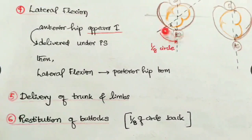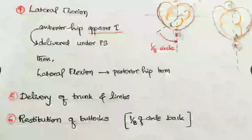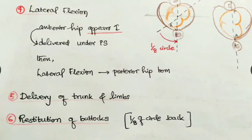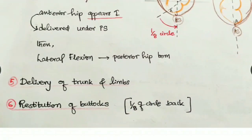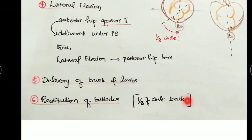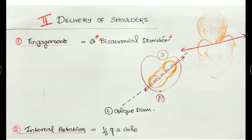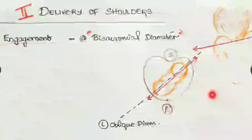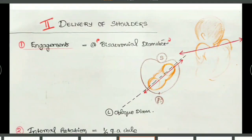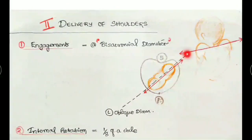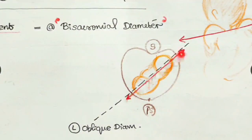Then there is restitution of the buttocks. After internal rotation it has to untwist itself - after delivery outside the body it untwists, that is the restitution, one-eighth of the circle backwards. Next is delivery of the shoulders, where the engagement diameter is the bisacromial diameter - across the two acromial processes.